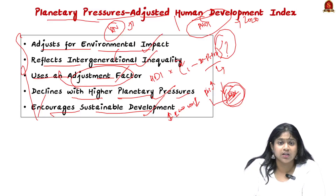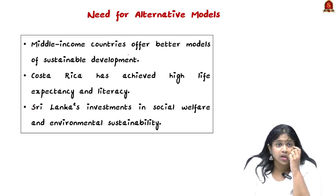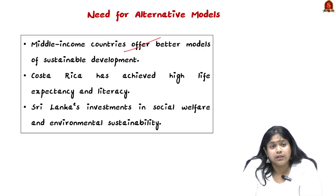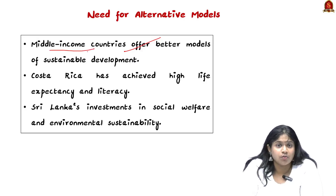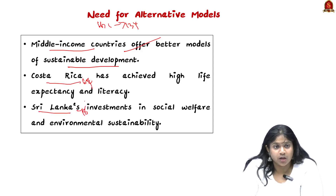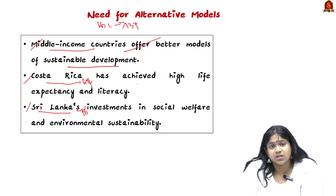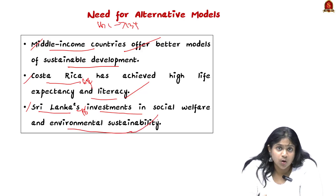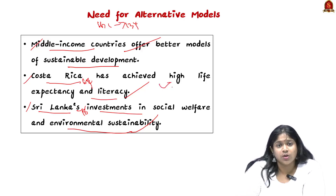There is a need for an alternative development model. Comparing India with other middle-income countries, India ranks 134th in the HDI, while Costa Rica ranks 64th and Sri Lanka ranks 78th. Costa Rica has achieved high life expectancy and literacy, and Sri Lanka's investment in social welfare and environmental sustainability have produced alternative sustainable development models that lead to progress beyond just monetary value.